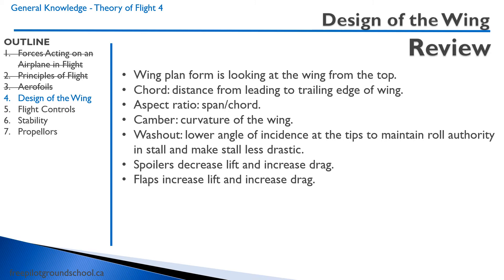The camber is the curvature of the wing. Washout is a deliberate design feature whereby there is a lower angle of incidence at the tips, designed to maintain roll authority in the stall and make the stall less drastic. Spoilers decrease lift and increase drag, and flaps increase lift and increase drag.